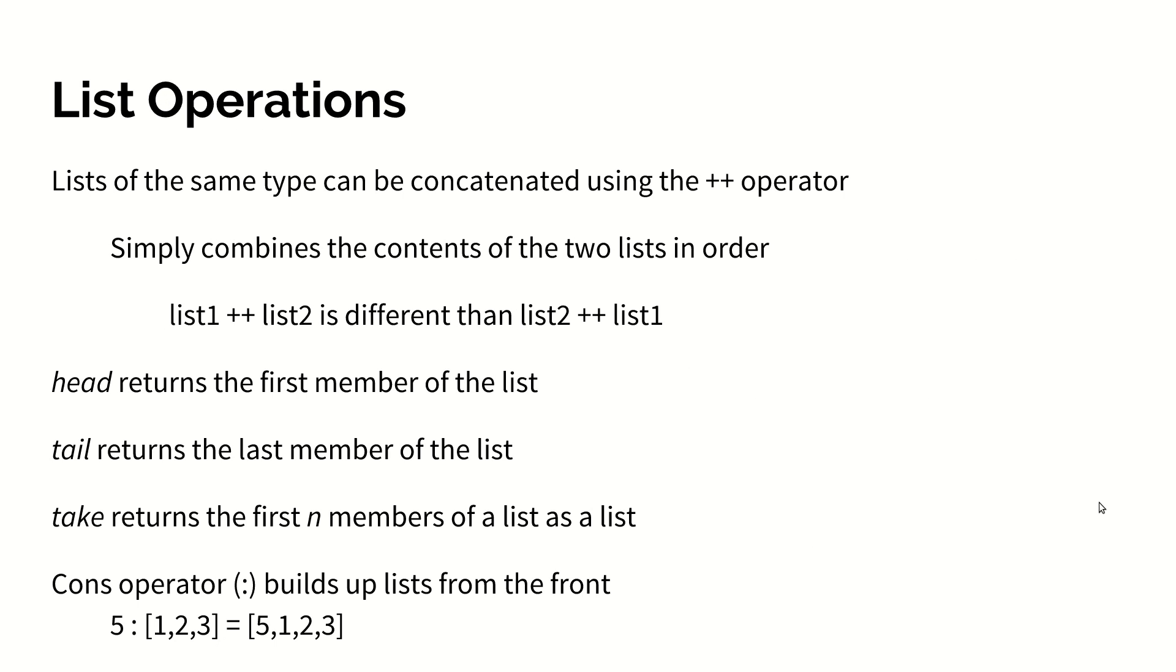It's now worth talking about some basic list operations in Haskell. Lists of the same type can be concatenated using the plus plus or concatenation operator, which simply combines the two lists by putting the contents of the first one in front of the contents of the second one in a new list. The head function returns the first member of a list, tail returns the last member of a list, and the take function returns a sublist that is the first n members of a list as a list. The cons operator, which is the semicolon, builds up a list from the front. It's kind of like the push operation. For example, 5 cons 1, 2, 3 results in a list of 5, 1, 2, 3.